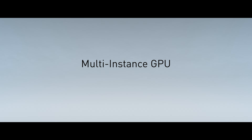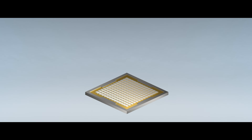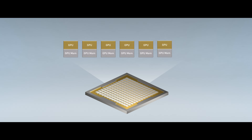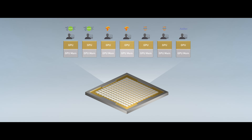Multi-Instance GPU, or MIG, is a revolutionary technology that expands the performance of each NVIDIA A100 Tensor Core GPU. With MIG, an A100 can be partitioned into as many as seven instances, each fully isolated with their own high-bandwidth memory, cache, and compute cores. This delivers seven times the GPU resources, whether it's higher performance on one job or expanded access to many of them.